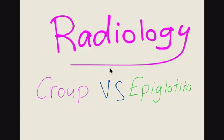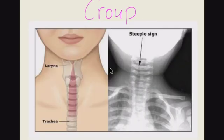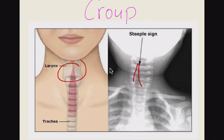Next is the radiological findings. Croup usually presents with the steeple sign, due to subglottic narrowing of the larynx. While epiglottitis presents with the thumb sign on radiological imaging. This steeple sign in croup represents the narrowing of the subglottic airway.